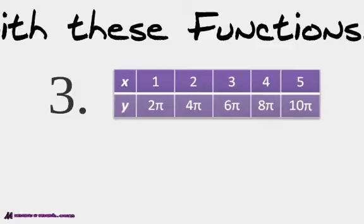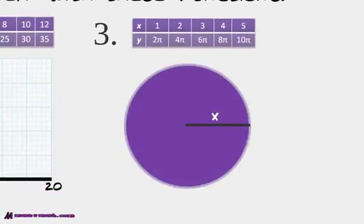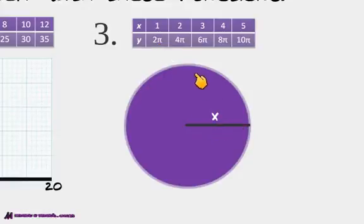Now you do this one on your own. We've got x-values 1, 2, 3, 4, 5 and y-values 2π, 4π, 6π, 8π, 10π. This is an example where x is the radius, and we're looking at something involving 2π. Graph that and see what you get. Is this linear?